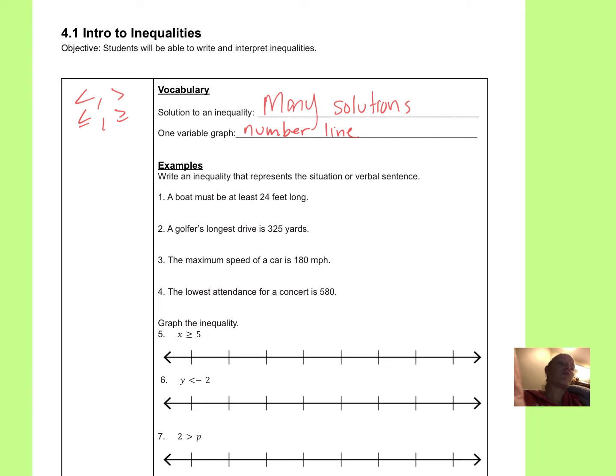So a one variable graph, we use a number line. So when we were plotting those points, we had an x and a y. That's two variables. That's when we had the coordinate plane. But if we just have one variable, whatever that variable happens to be, we use a number line.